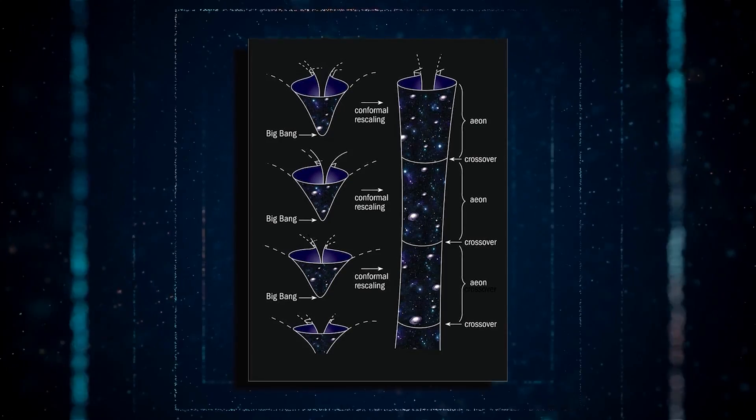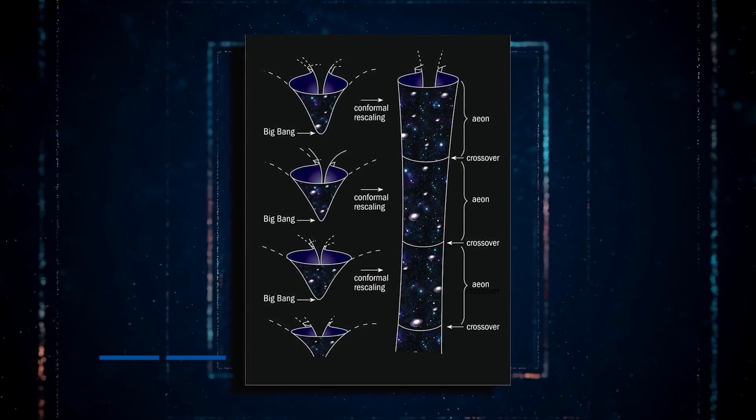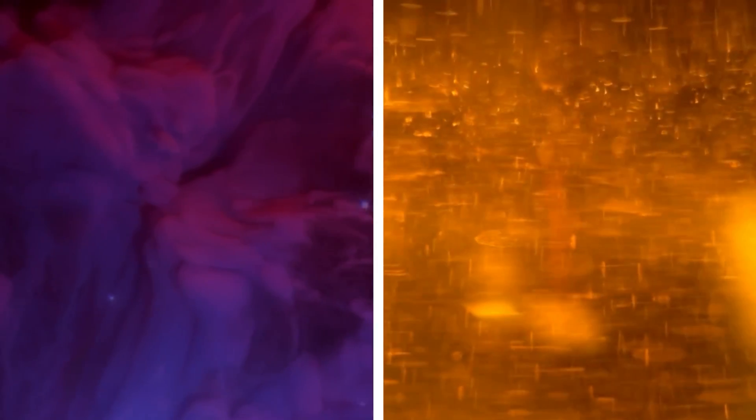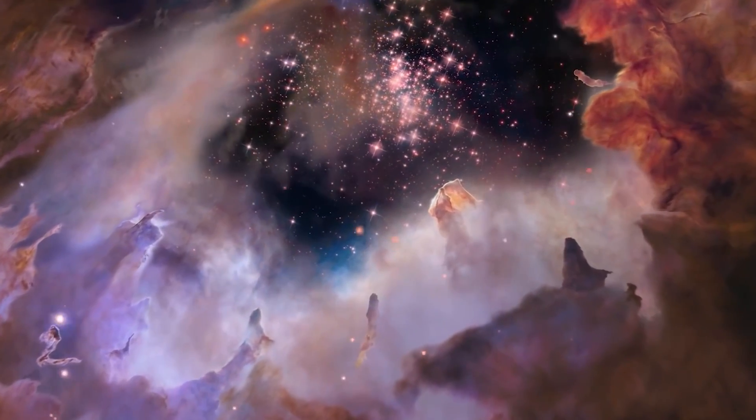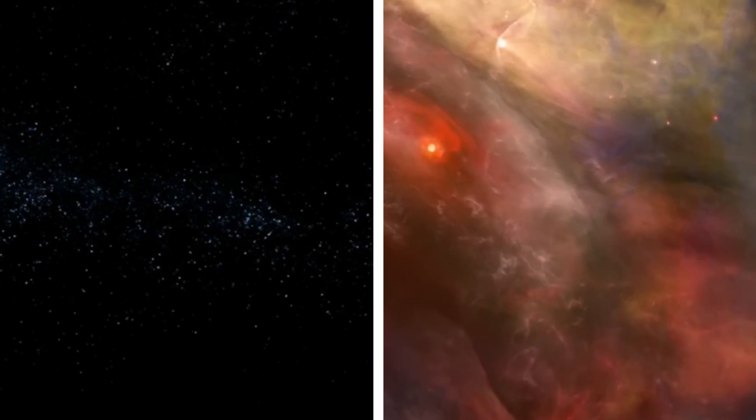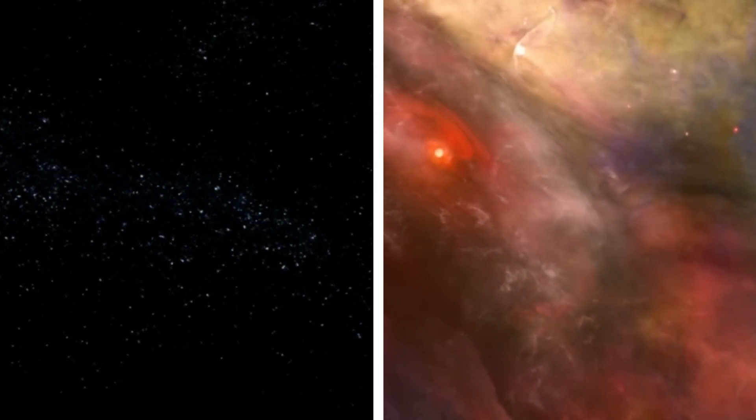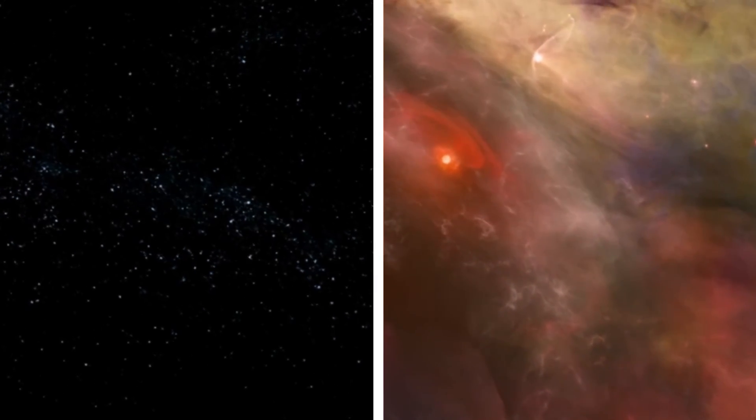The key lies in a complex mathematical technique called conformal rescaling, which is a geometric transformation that alters the size of an object while preserving its shape. Penrose demonstrated that the cold-empty state and the hot-dense state can be connected through such rescaling, aligning their space-time structures, although their sizes differ. It is admittedly challenging to comprehend how two objects can be identical in this manner, despite having different sizes.